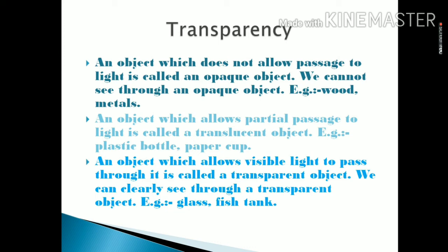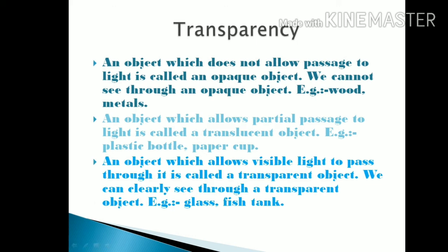The second category: an object which allows only partial passage of light is called a translucent object. We can partially see through it and partial light can pass through it. Examples include a plastic bottle or some paper cups.